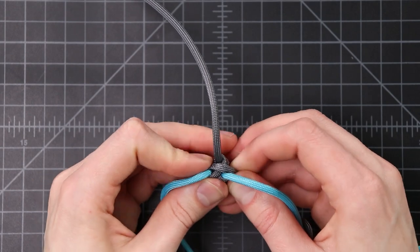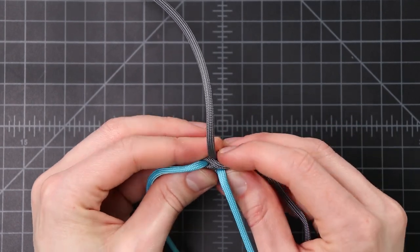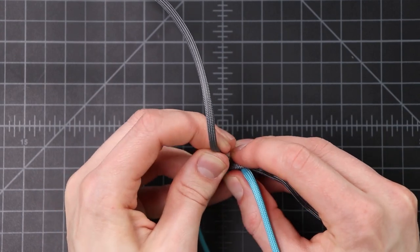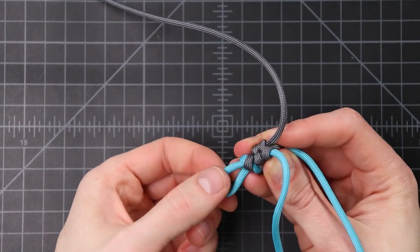So one more time, let's tighten that down a little bit first, make sure everything is in place, pulling each of our core strands except we don't want to pull our loop too tight.